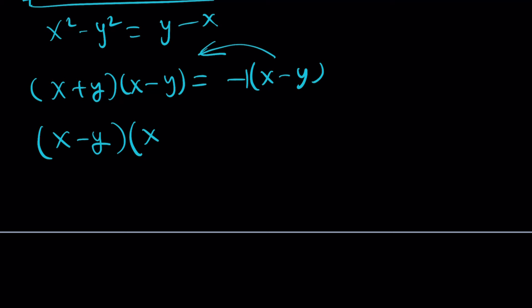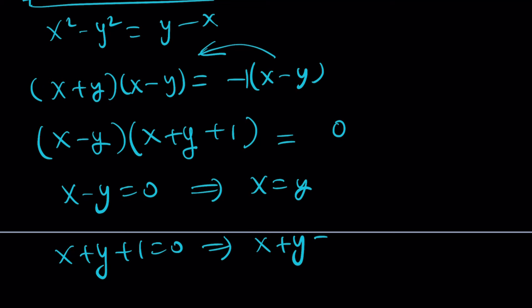So now you can factor out x minus y. Can I skip that step, please? x plus y plus 1. Be careful, it's not minus 1 because it's going to be negated and 0. This is really cool, isn't it? Now from here we get two things. x minus y is equal to 0, which implies x equals y. Or x plus y equals negative 1. Or x plus y plus 1 equals 0, which is x plus y equals negative 1.